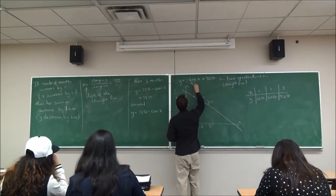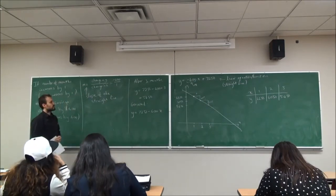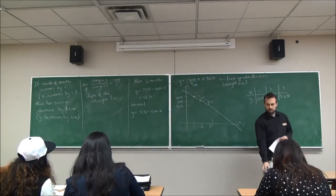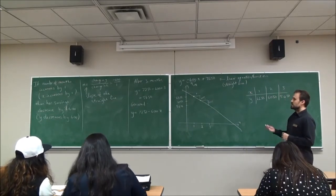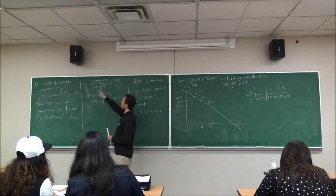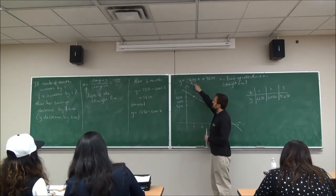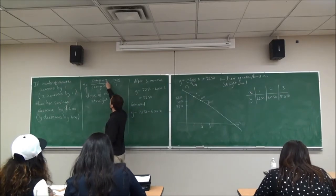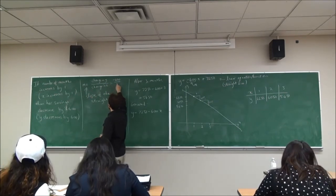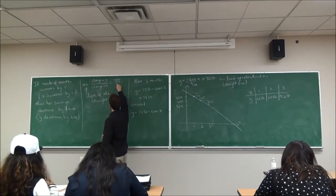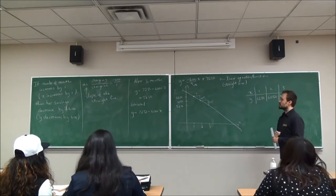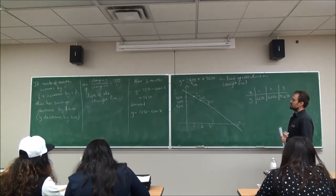The slope is exactly this coefficient in my equation. We call it M — someone decided M and it just took off. M is the letter for the slope. One of the key things I want to do is interpret what this number means: the number in front of X. It's the change in Y over change in X. In this case, for every one month she goes forward in time, she loses $600. So first thing: I want to be able to interpret the slope correctly.